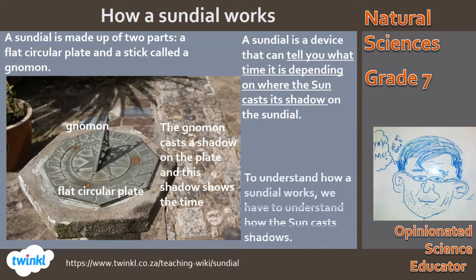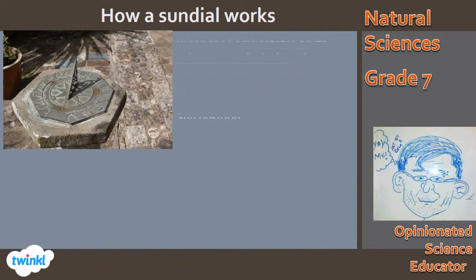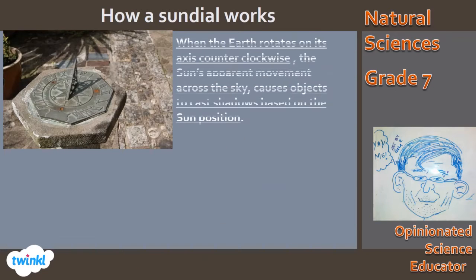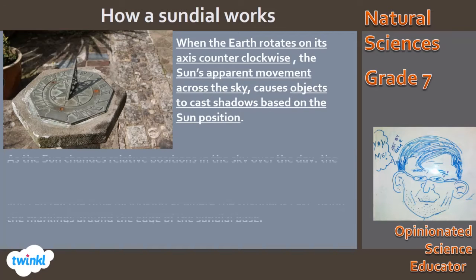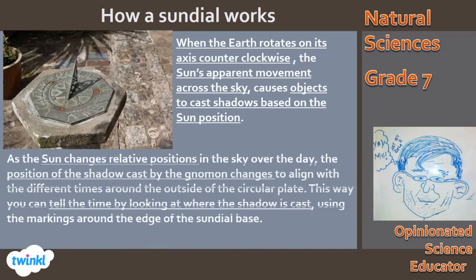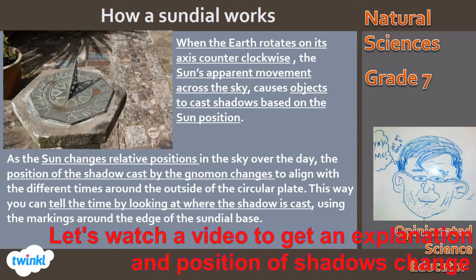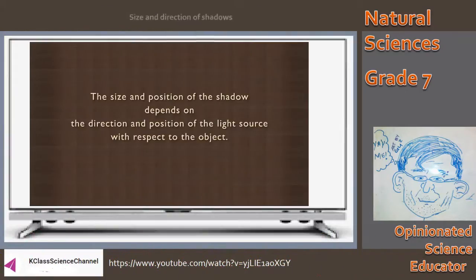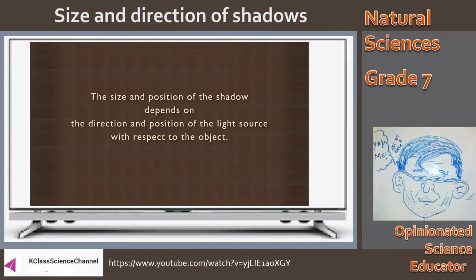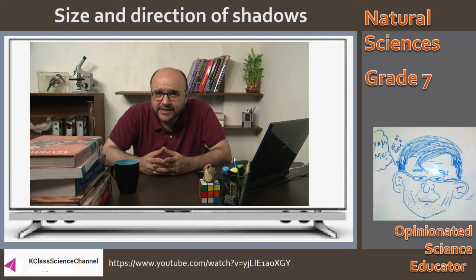You have to understand how the sun casts its shadows to understand how a sundial works. As the earth rotates on its axis, the sun's apparent movement across the sky causes objects to cast shadows. As the sun's position changes, it casts the shadow and this aligns with the different times around the plate, and we can tell the time. The size and position of the shadow depends on the direction and position of the light source with respect to the object. Let us conduct an activity to study the direction and size of the shadow.